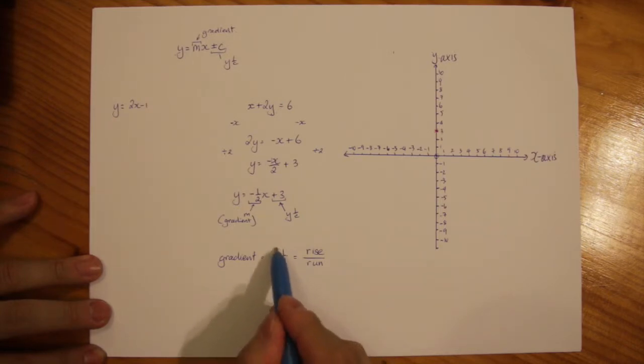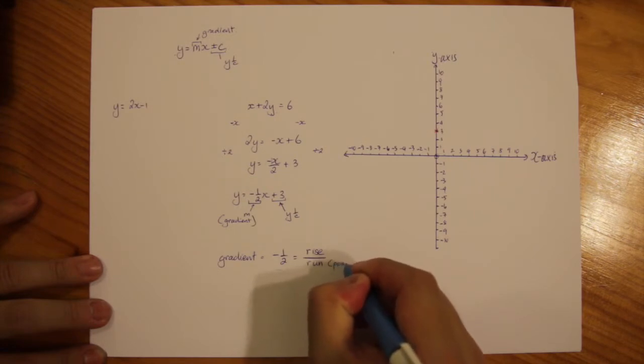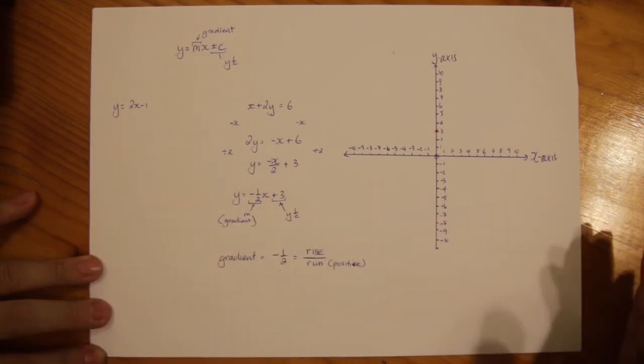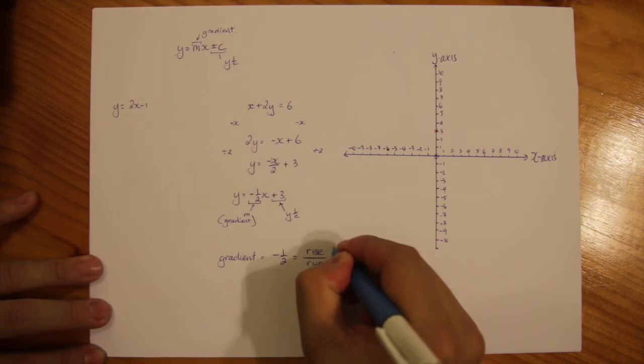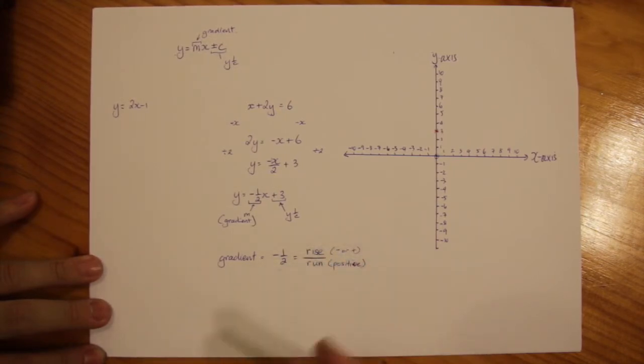By looking at this and looking at that formula, the top number is our rise and the bottom number is our run. Just to let you know that your run is always going to be positive because you're working from left to right. Your rise could be negative or it could be positive because that will determine if your line is going up or if your line is going down.